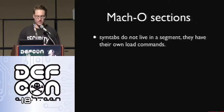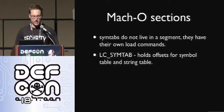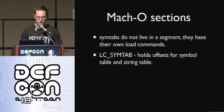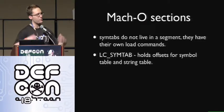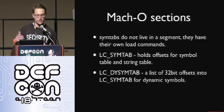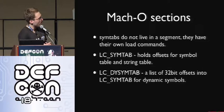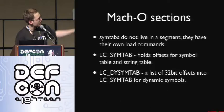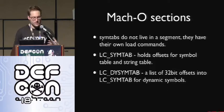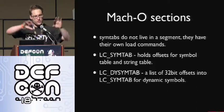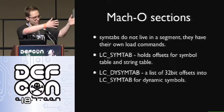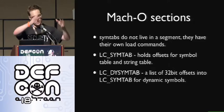An important thing to note is that symbol tables do not live in a segment in Mach-O — they have their own load command, the LC_SYMTAB load command. This is basically a structure that tells you at this spot in memory there's a bunch of strings and mappings from those strings to offsets. There's also a DYSYMTAB. In Mach-O, the DYSYMTAB describes how dynamic functions work and is actually just a list of offsets into the SYMTAB. So on ELF you have two separate tables; on Mach-O you have one table and then a set of indexes into that table for things that are exported.